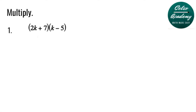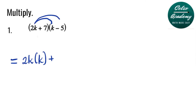Example number one: multiply 2k plus 7 and k minus 5. We will use distributive property. First, we will multiply the first terms 2k and k. Plus, step two, we will multiply the outside terms, that is 2k times negative 5. Now we will distribute the 7, multiplying 7 and k — the inside terms.